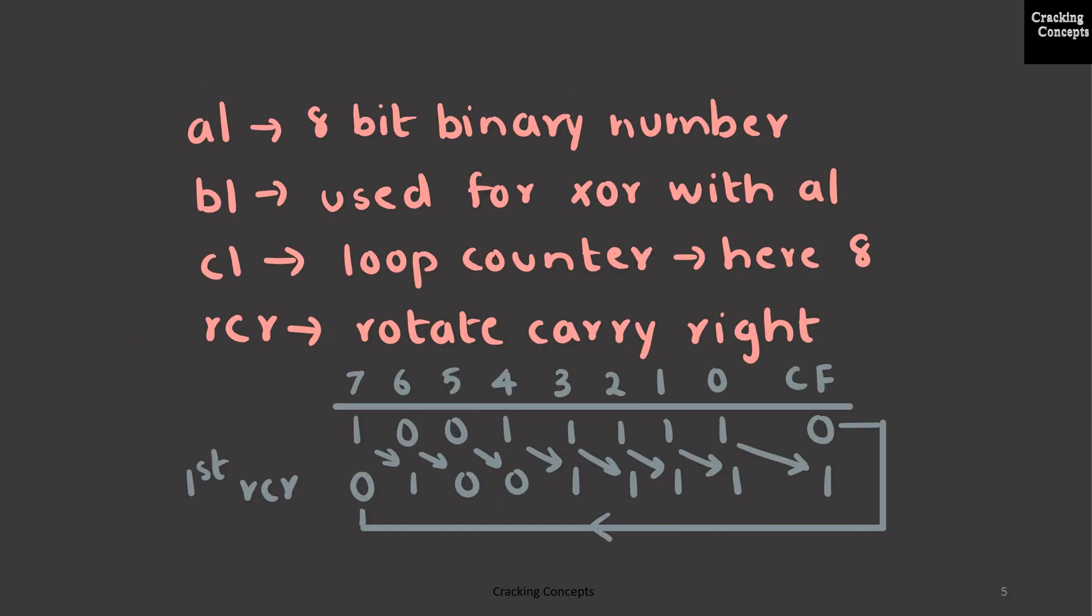Now we will look into the registers and instructions that we will be using in the program. AL register is used to store the 8-bit binary number. BL register will be where we keep a copy of the AL register, which will be later used for XOR operation. And CL will be where we store the counter value for the loop. Here it will be 8, since the number of binary digits in AL is 8.